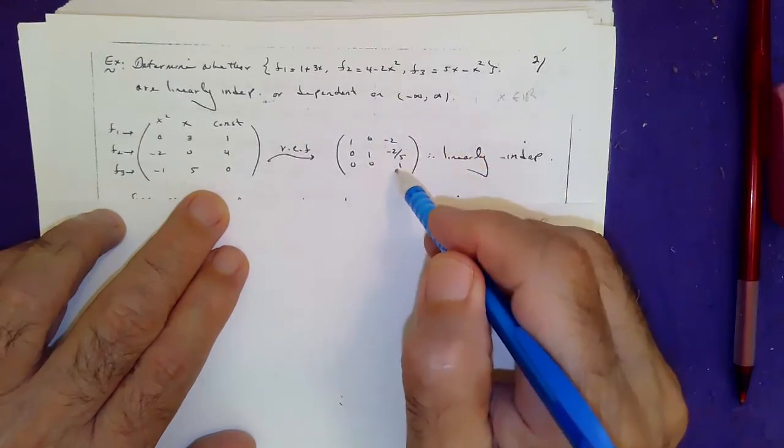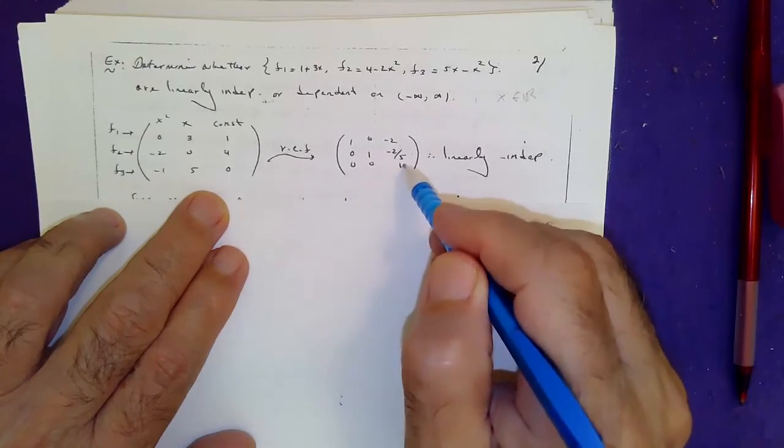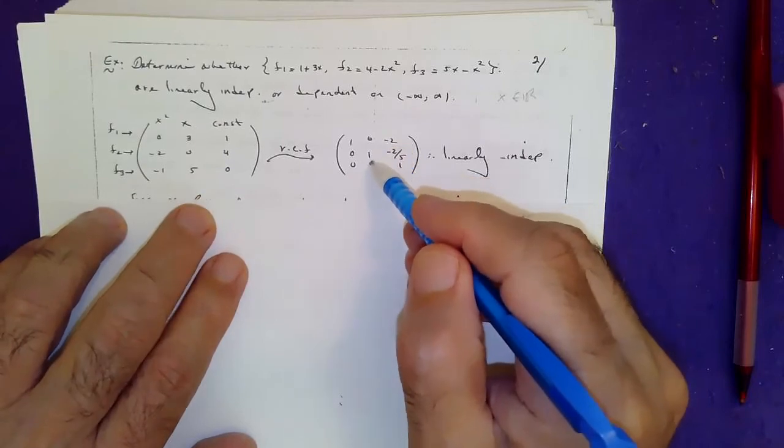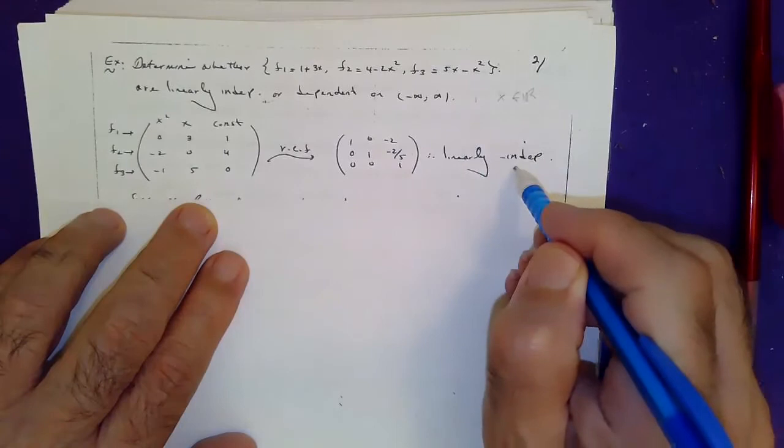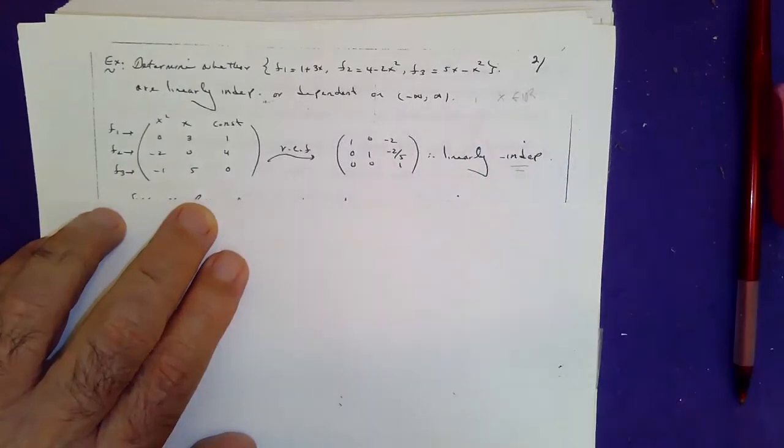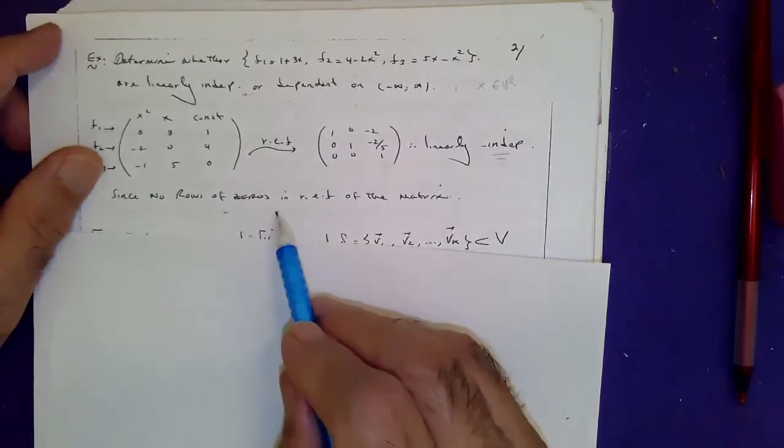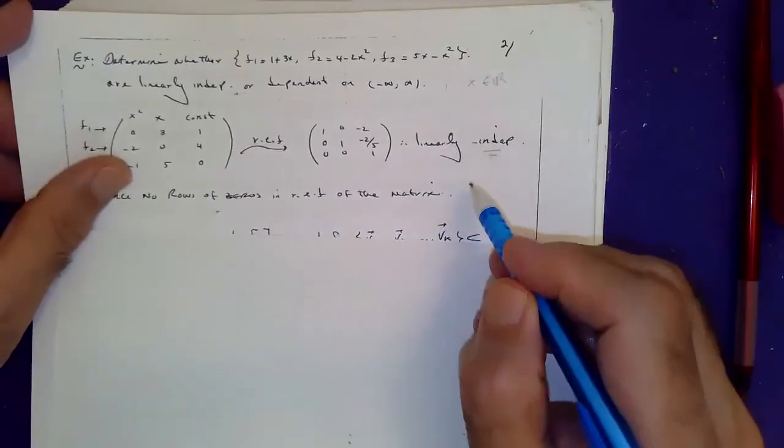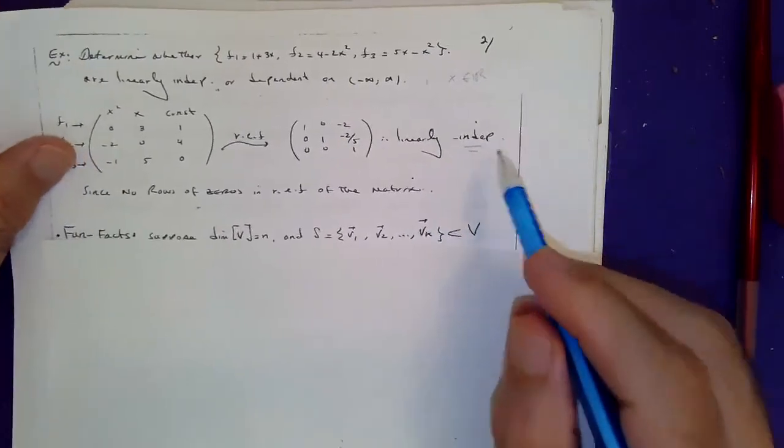Take a look at the row echelon form and see none of these rows have nothing but zero in them. Well, neither of them have nothing but zeros. They are non-zero rows, so therefore those functions are linearly independent. Once again, because no rows of zeros in row echelon form results in linearly independent.